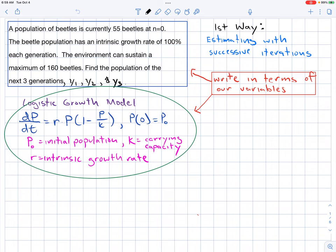To solve this problem, we look at the logistic growth model, which you can see here, where P sub 0 is the initial population, r is the intrinsic growth rate, and k is the carrying capacity.